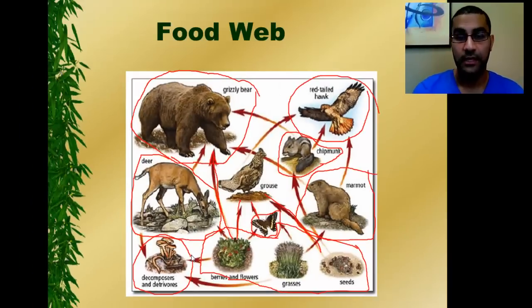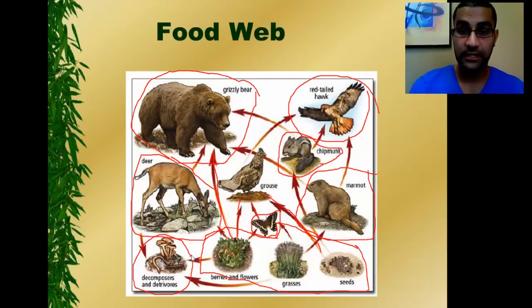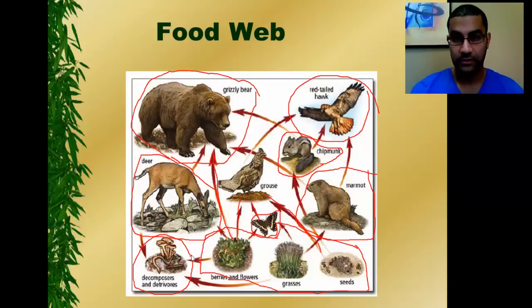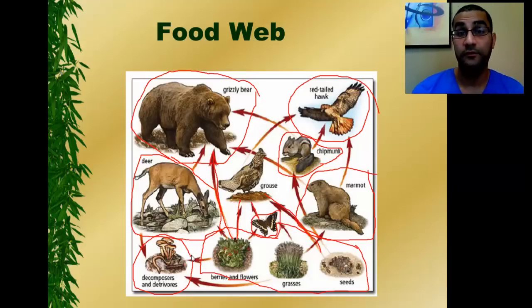Down here we have our decomposers. The term detritivore means like a scavenger — they only eat the flesh of things after they die, like vultures. But decomposers are the ones we focus on: they absorb nutrients from dead and decaying matter so those nutrients can be recycled back into the ecosystem. Technically, you can draw an arrow from every single organism to the decomposer. Hopefully you now have a good understanding of the difference between a food chain and a food web, and you know the types of consumers — carnivore, herbivore, omnivore — as well as the role of producers. Thanks for watching, and I'll see you next time.